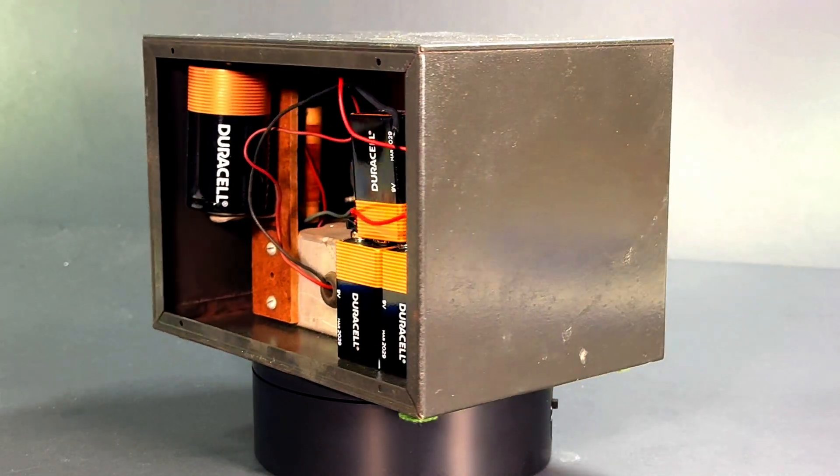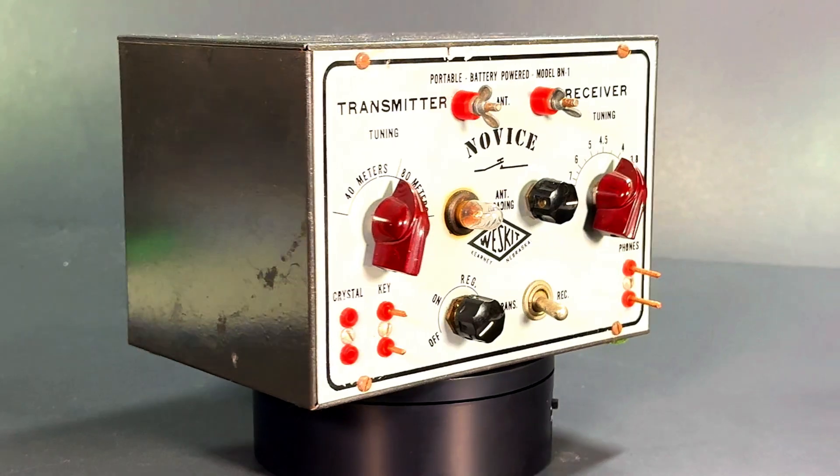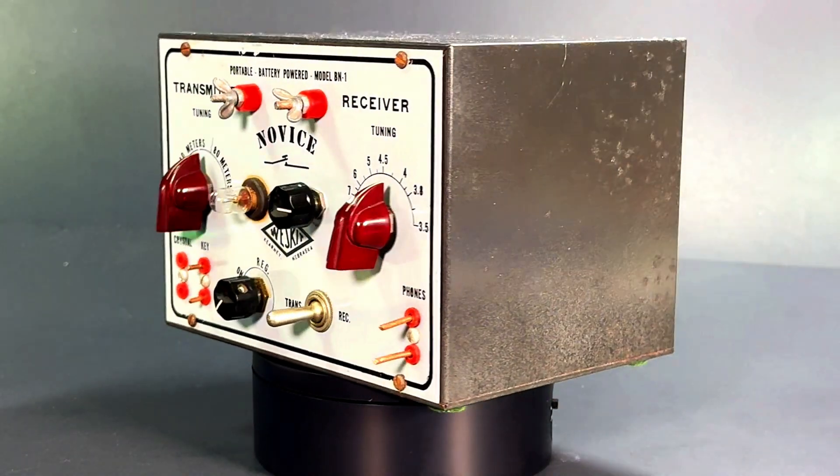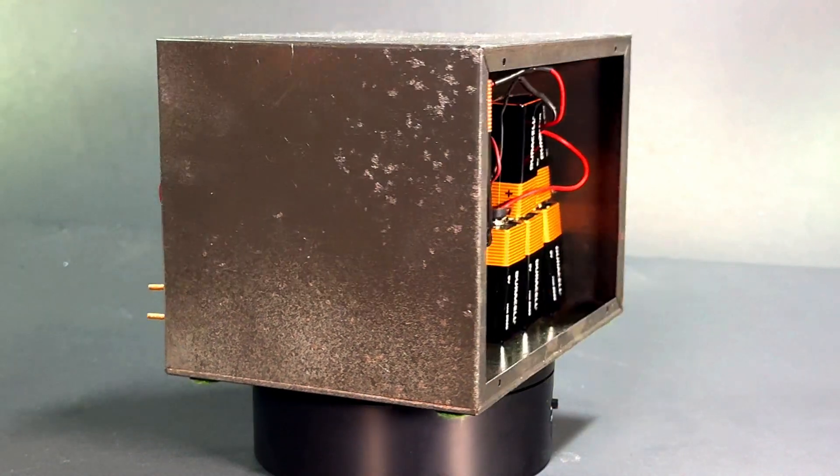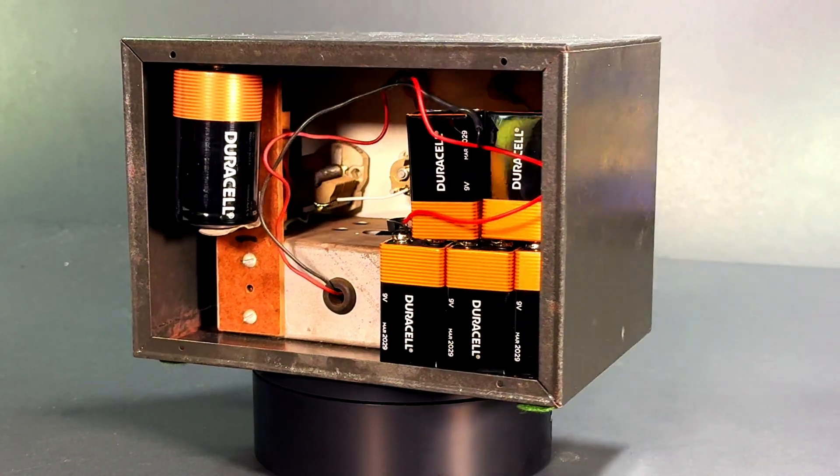Nine volt batteries I'm using here to get me to 45 volts for the receiver, and a single one and a half volt battery for the tube filaments, which is interesting because the tube is a three volt tube, but we're only using one and a half volts, and that's because the filament is split into two parts.